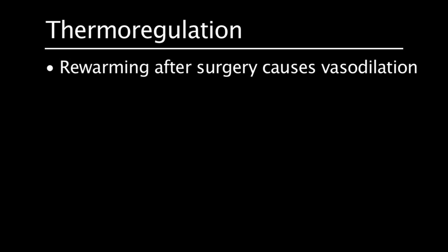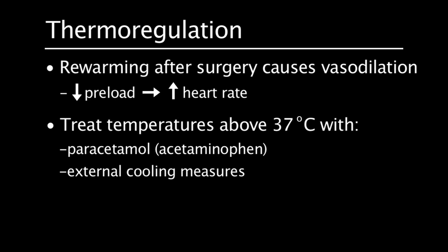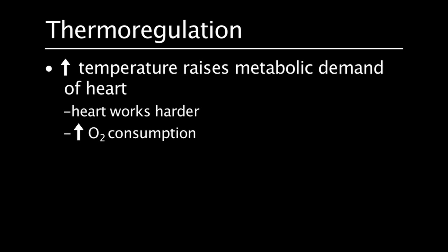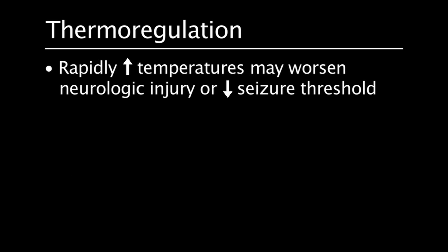Re-warming after cardiac surgery causes the patient to vasodilate, decreasing cardiac preload and leading to tachycardia, so volume replacement should be provided as needed. Temperatures above 37 degrees Celsius may be treated with paracetamol or acetaminophen and external cooling measures. Increased temperature raises the metabolic demand of the heart, causing greater oxygen consumption — research indicates that for every 1 degree rise in Celsius there is as much as an 11% increase in myocardial oxygen consumption. Rapidly rising temperatures above normal may worsen neurologic injury or decrease the seizure threshold; therefore, patient re-warming should be done slowly.